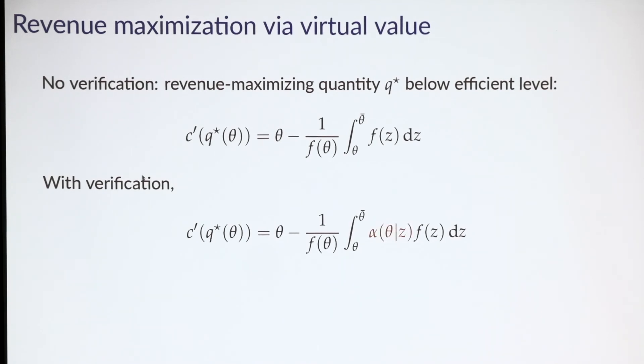With verification, we equate marginal cost not with the standard virtual value, but with a new augmented form. The key difference is the alpha here. If alpha is always 1, the verification technology is useless and the solutions coincide. But as verification becomes more precise, alpha shrinks, which means the right hand side increases and quantity increases. The principle reduces downward distortion because increasing quantity for a low type has less effect on information rents of higher types. As verification becomes perfect and alpha goes to zero, we converge to the efficient allocation. More generally, this illustrates how probabilistic verification provides a way of continuously interpolating between the classical private information and perfect information environment in mechanism design.